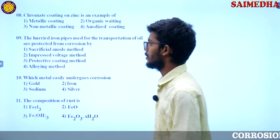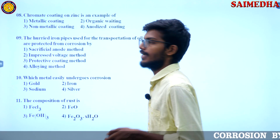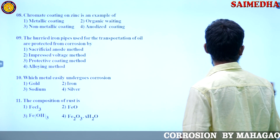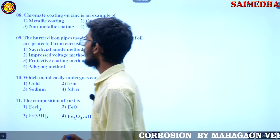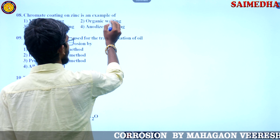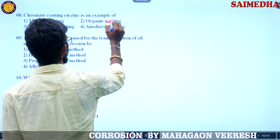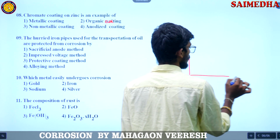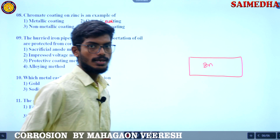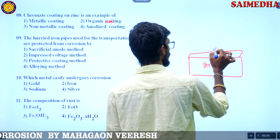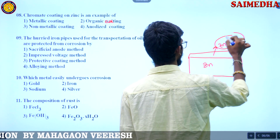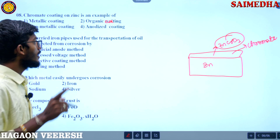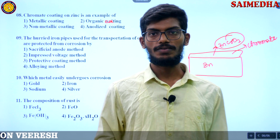Now we will go with the next question. Chromate coating on zinc is an example of what? So chromate coating — this is coating, not waiting — so chromate coating on zinc. If you see, we have zinc and above we are applying zinc chromate (ZnCrO2). So under what classification does this fall? It is already given in the classification.